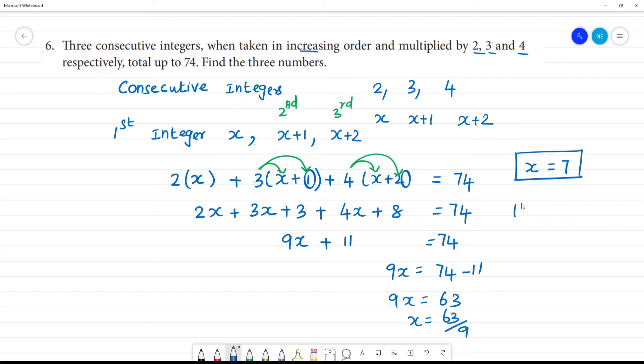Clear. The first integer is 7. Then the second integer is 8, and the third integer is 9.